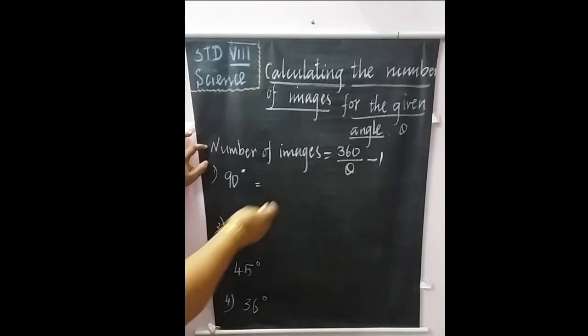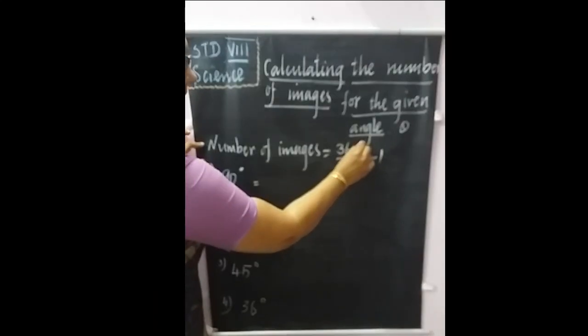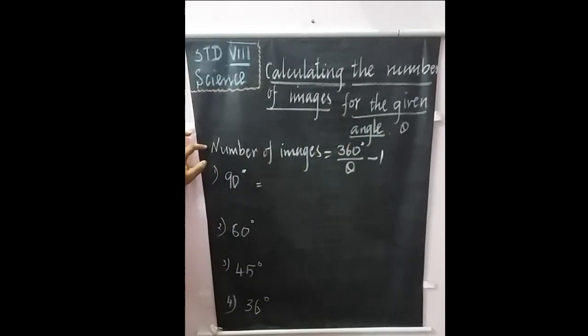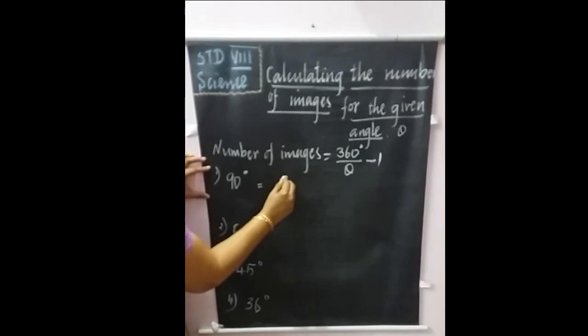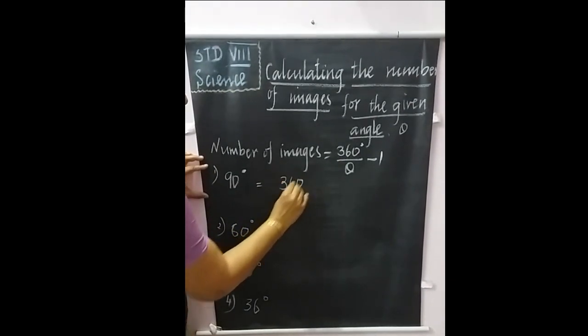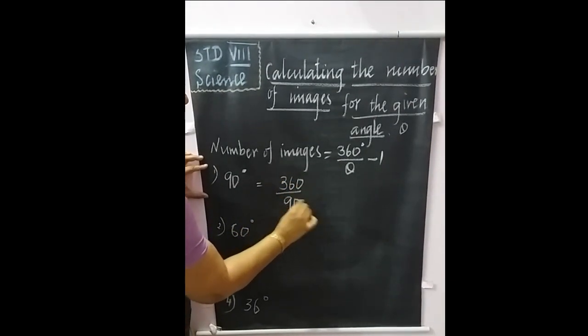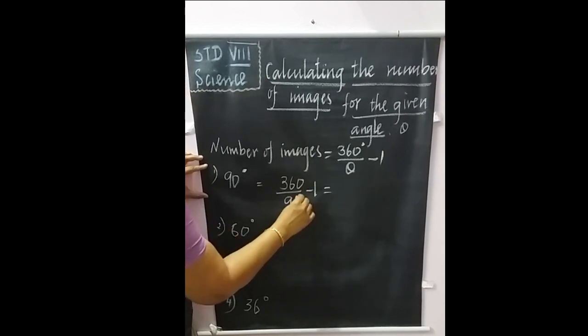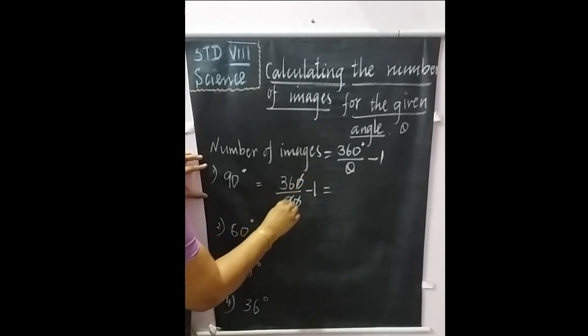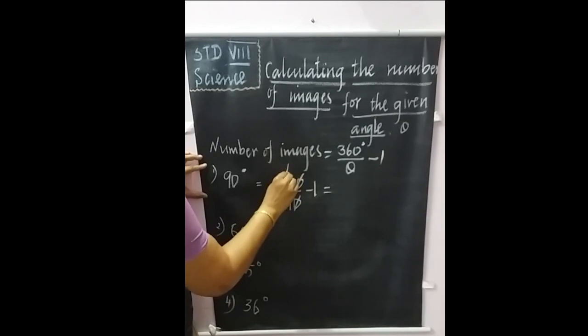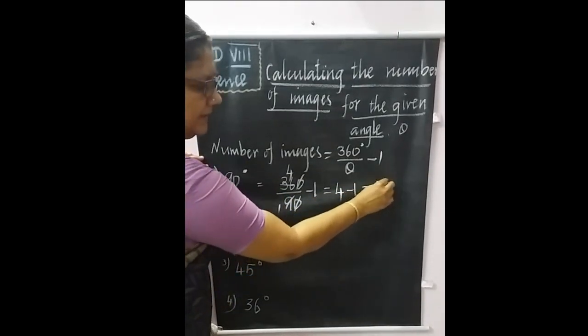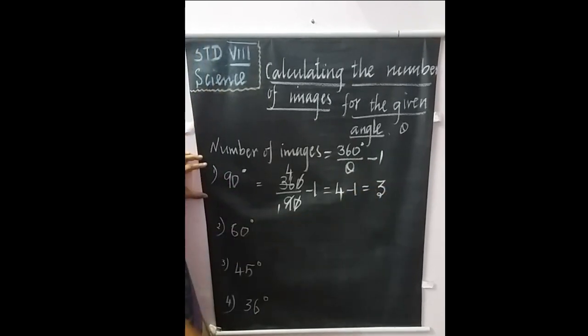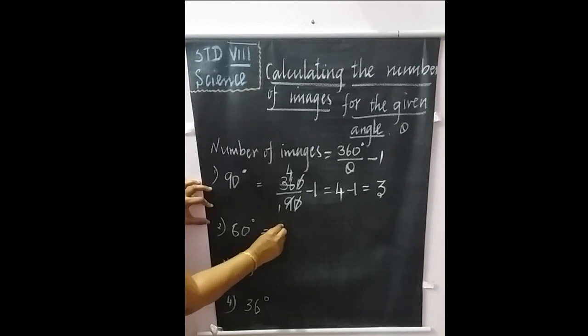Number of images equals 360 degrees by theta minus 1. We will see how to calculate this. For 90 degrees: 360 by 90 minus 1. You can cancel this with the 9th table, 4 nines are 36, 4 minus 1, 3 images can form for 90 degrees.